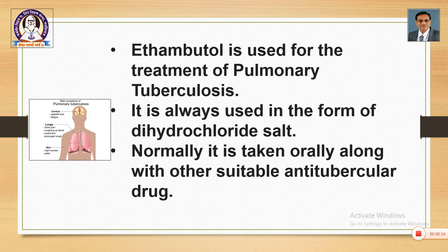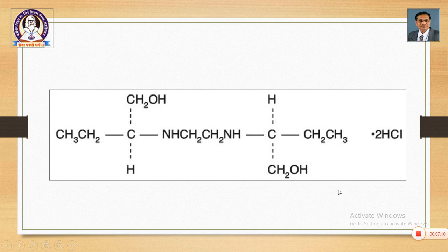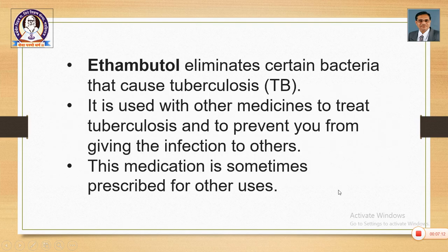Ethambutol is used for the treatment of pulmonary tuberculosis. It is always used in the form of its dihydrochloride salt and is normally taken orally along with other suitable anti-tubercular drugs. Ethambutol eliminates certain bacteria that cause tuberculosis. It is used with other medicines to treat tuberculosis and to prevent transmission of the infection to others. This medication is sometimes prescribed for other uses as well.